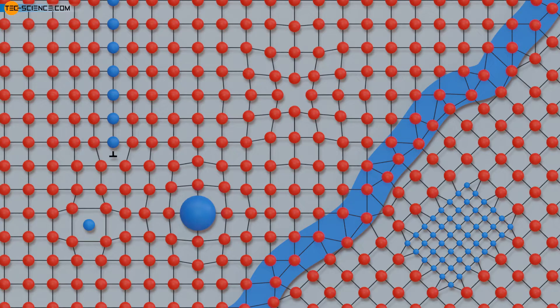So-called point defects disturb the surrounding lattice only within a very limited area. They are also called zero-dimensional defects. These include vacancies, substitutional atoms, and interstitial atoms. We will discuss these defects in more detail in the following.